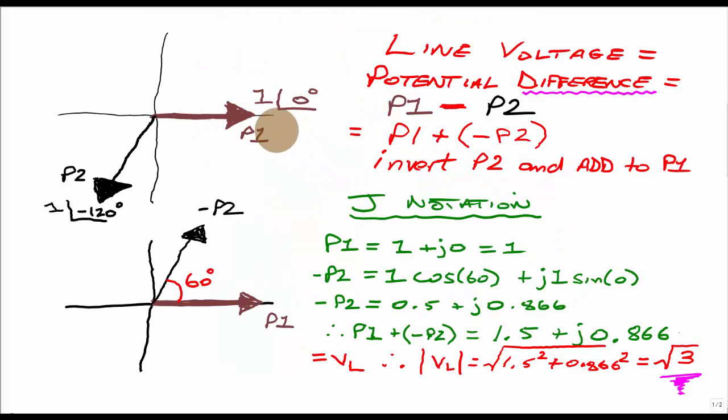We're then going to move on and have a look at a couple of phases in a 3-phase UK system. Phase 1, phase 2 and we'll see how we need to invert one of those phases as we've done here and move on and analyse the system in terms of J notation and step by step we will arrive at this mysterious root 3 figure.